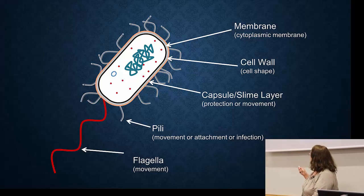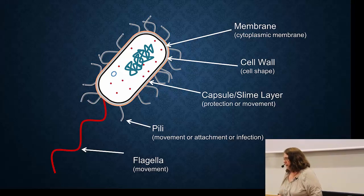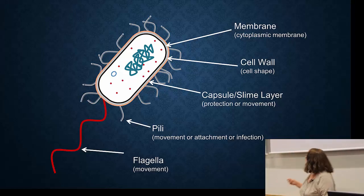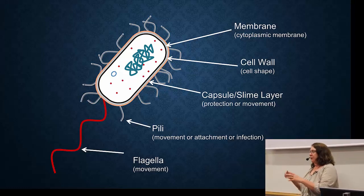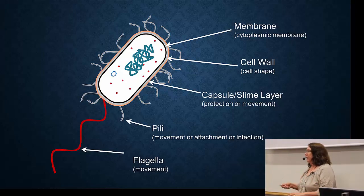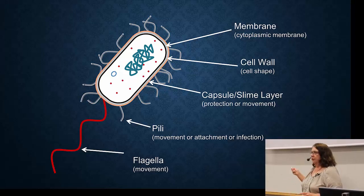Lastly, we have flagella. Flagella is a classic way that bacteria move. They're extremely long — I can't show them here because they're off the slide. They spin around so that the bacteria can swim through liquid, and bacteria can swim quite well and quickly with a flagellum. There are also different types of flagella.